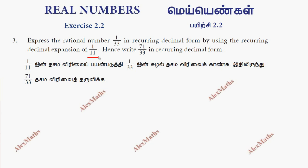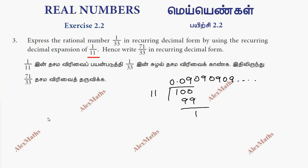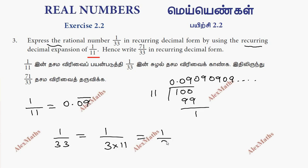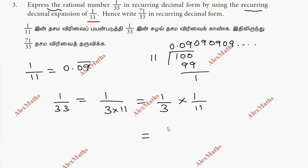First, 1 divided by 11. Now, 1 by 33 can be written as 1 by 3 into 11, that is 1 by 3 into 1 by 11. Since 1 by 11 is 0.09 bar, we can use that to find 1 by 33.